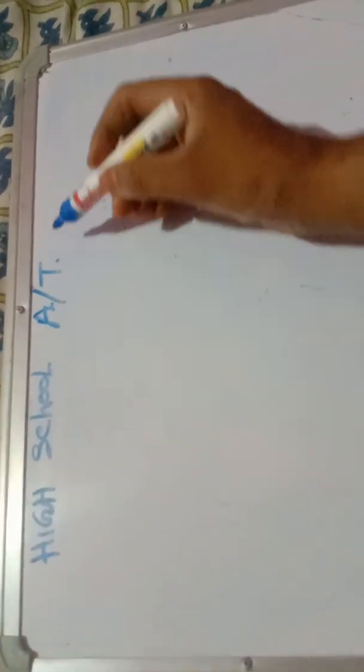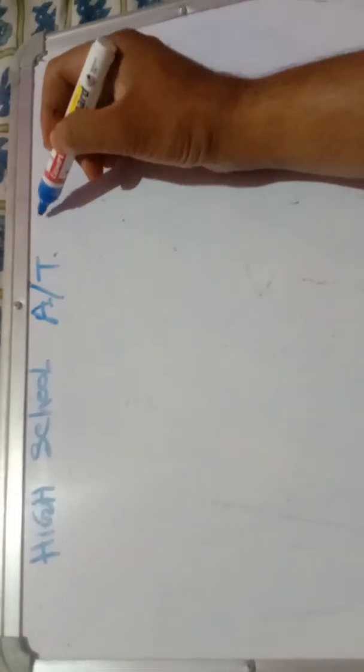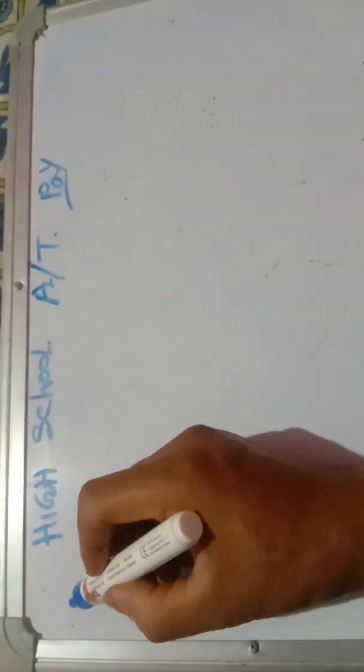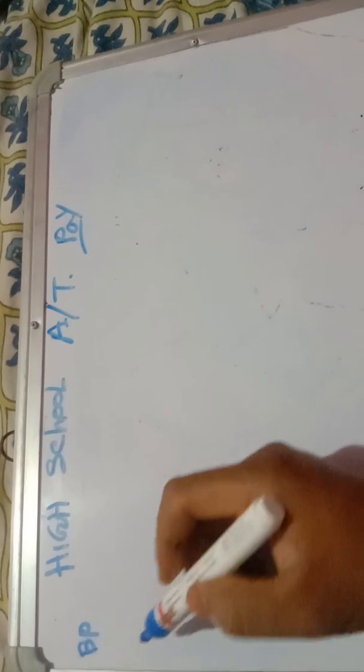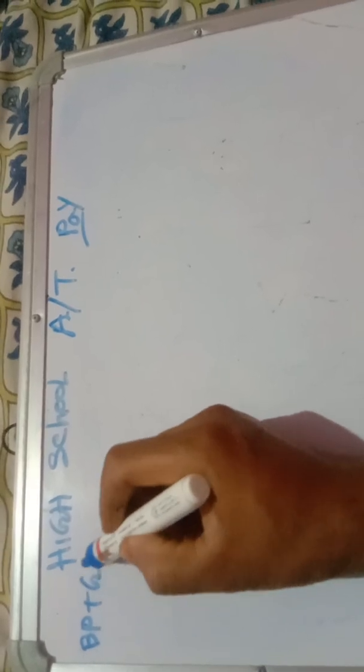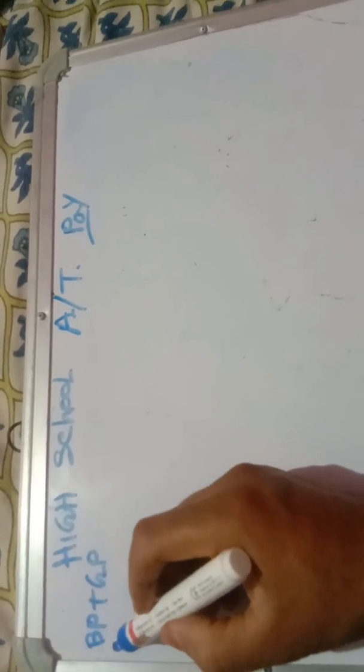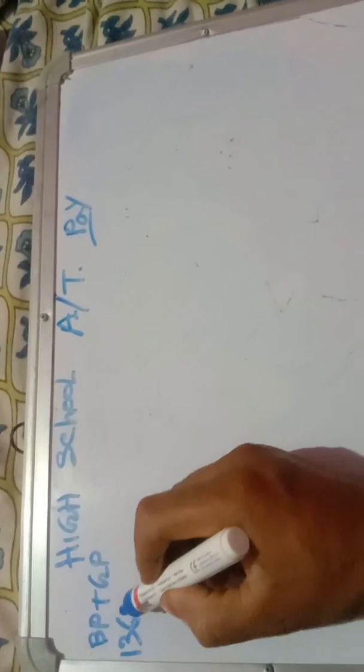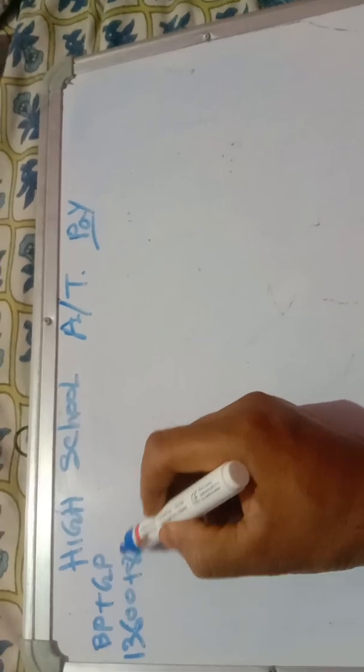High school assistant teacher. Then pay plus grade pay, here we have 10,000, 600, total.